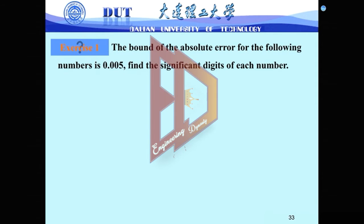We are given the error bound. For the following numbers, we already know the error bound is 0.005. Then we need to check how many significant digits for each number.